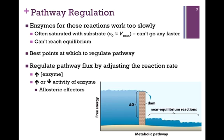One way we could increase the flow through the pathway is to simply make more enzymes. More likely, however, we'll increase or decrease the activity of the enzyme by using allosteric effectors, and we'll see examples of this as we move along.